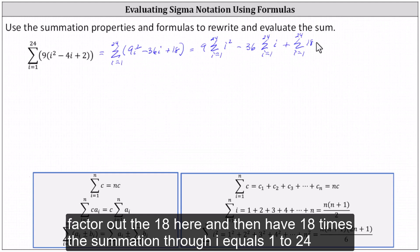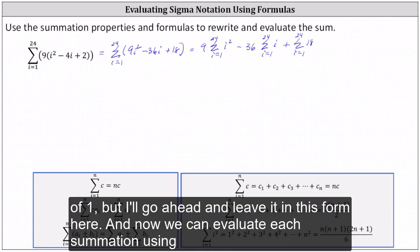We could factor out the 18 here and then have 18 times the summation from i equals 1 to 24 of 1, but I'll go ahead and leave it in this form here.